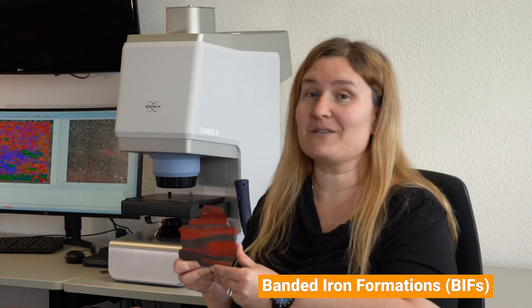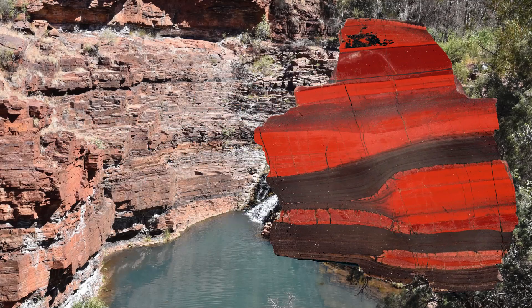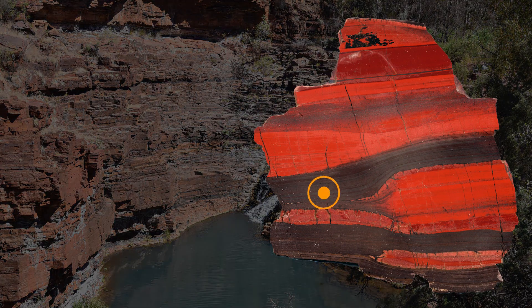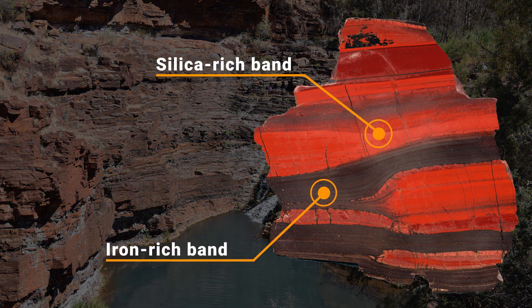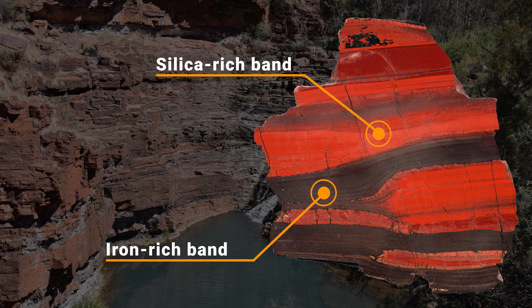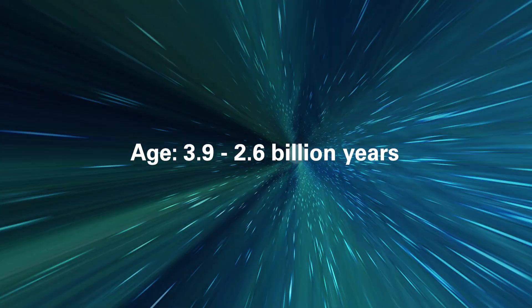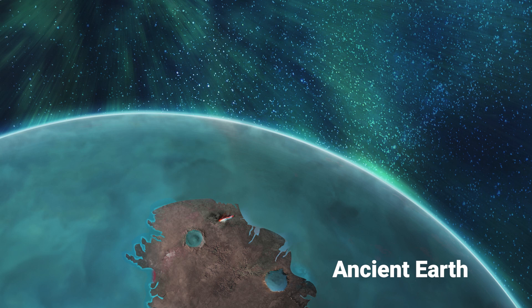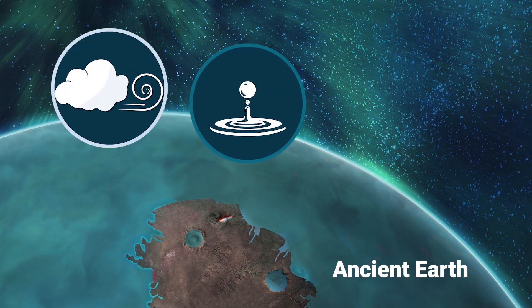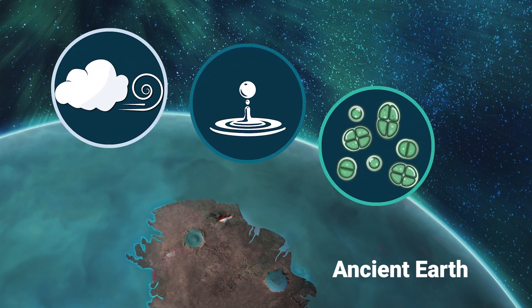Let's start with banded iron formations, one of the most iconic and, may I say, most beautiful rocks in Earth history. BIFs are characterized by their distinctive layering of iron-rich and silica-rich bands, which were formed billions of years ago. They are of enormous interest for research, as they can serve as an archive of ancient Earth's atmosphere, hydrosphere, and potentially its biosphere.